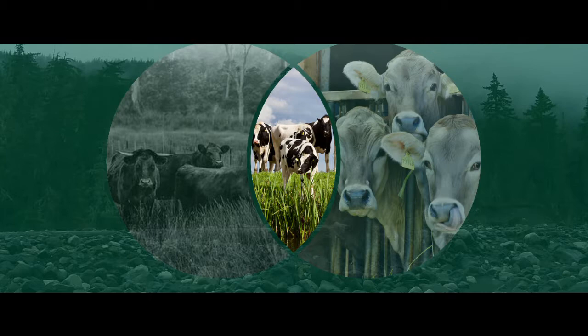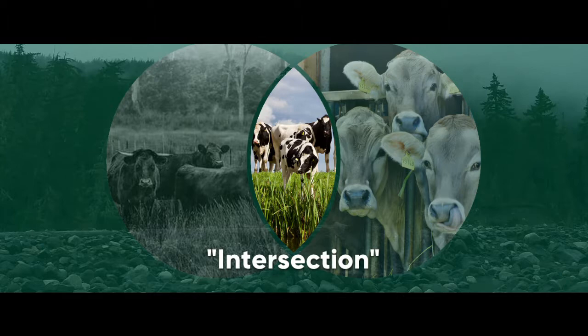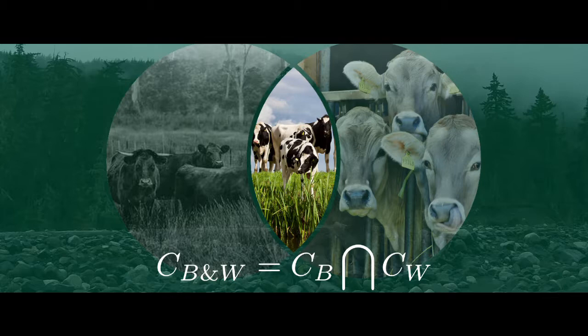We call this set, the set of having two properties simultaneously, the intersection of two sets. And write: C sub B∩W = C sub B ∩ C sub W.